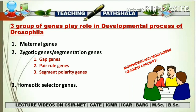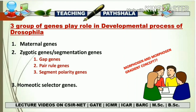When studying these three types of genes, there is a lot of involvement of the concepts of morphogen and morphogenic gradient. Your concept should be clear about what a morphogen is, its function, and its nature. A separate video on morphogen and morphogenic gradient has already been uploaded — clear your concepts there, because upcoming videos will extensively use these terms while studying the developmental process of Drosophila.